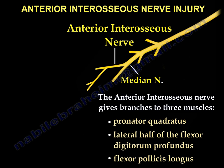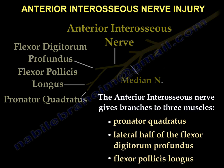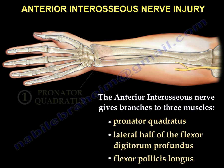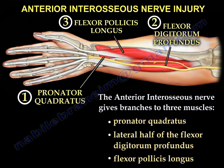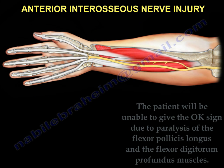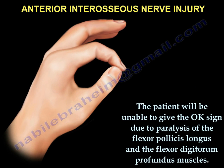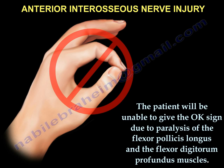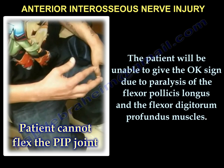The anterior interosseous nerve gives branches to three muscles: the pronator quadratus, the lateral half of the flexor digitorum profundus, and the flexor pollicis longus. With injury to the anterior interosseous nerve, the patient will be unable to give the okay sign due to paralysis of the flexor pollicis longus and the flexor digitorum profundus muscles. Here you can see an example of a patient that cannot make the okay sign.